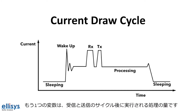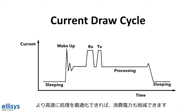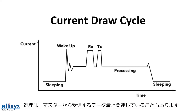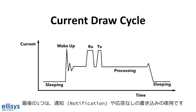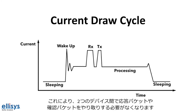Another variable is the amount of processing done after the receive and transmit cycle. If the processing can be optimized to be faster, that would help decrease power consumption as well. The processing can also be correlated with how much data gets received from the master. The last one is the use of notifications and writes without responses when possible, which will remove any need for acknowledgement and confirmation packets back and forth between the two devices.